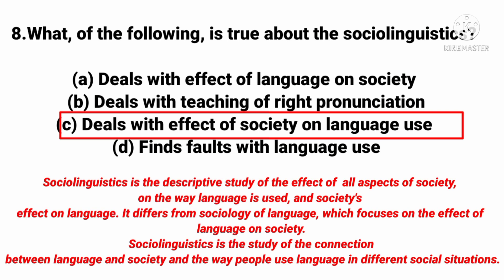The next question: What is true about sociolinguistics? The right answer is: it deals with the effect of society on language use. Sociolinguistics is a descriptive study of the effect of all aspects of society on the way language is used. Note the difference: the first option — 'effect of language on society' — relates to sociology, not sociolinguistics. Sociolinguistics specifically deals with how society affects language use.